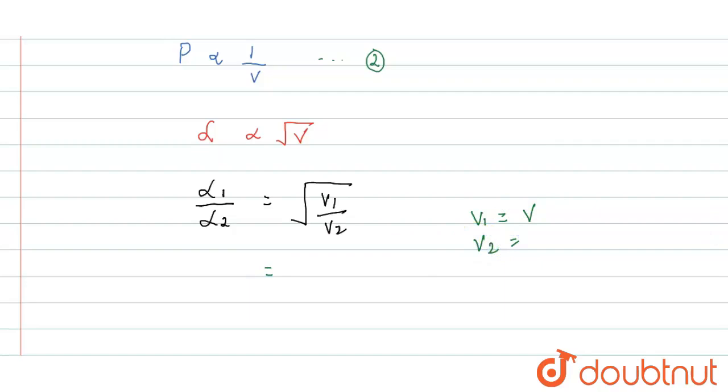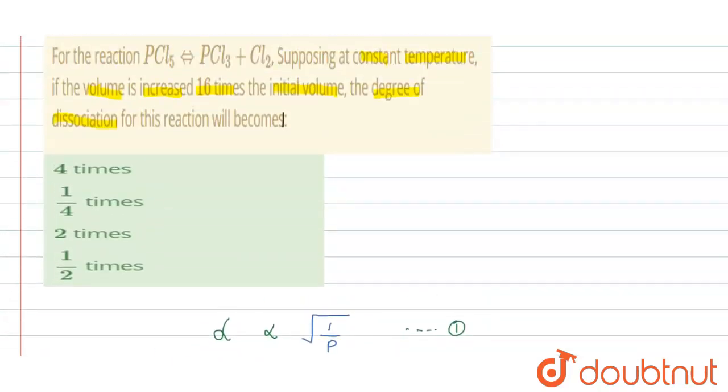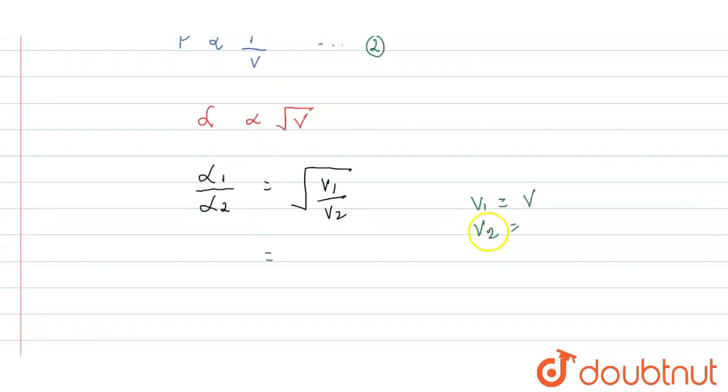So, what will be V2? As per the question, it is 16 times the initial volume. So, V2 will become 16V. Now, let us substitute this. So, square root of V by 16V.